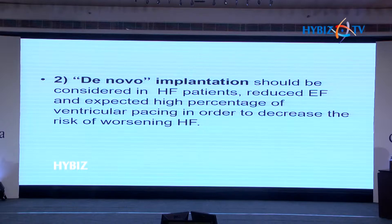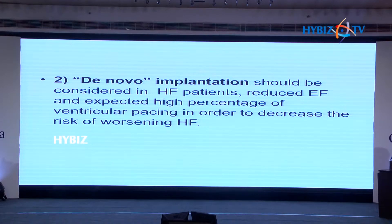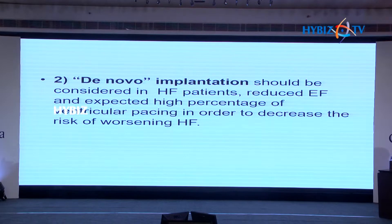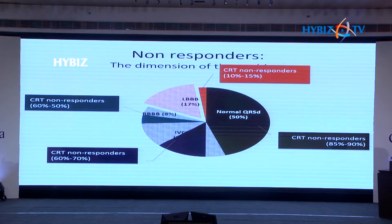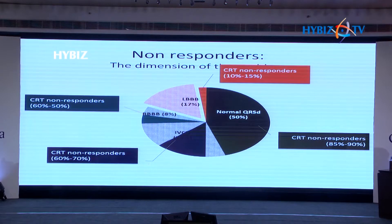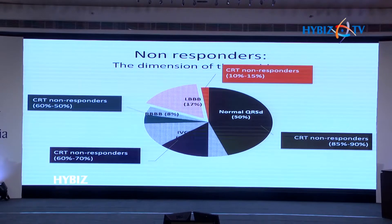Similarly, for de novo implantation — which we see very often in patients with cardiomyopathy, infiltrative cardiomyopathies, or post-congenital heart disease repairs — they come with an ejection fraction of around 35 to 40 percent with AV block. In these patients it's better to consider a de novo CRT implantation, because the Block HF trial has shown a significant improvement in hospitalization and better remodeling of the LV.